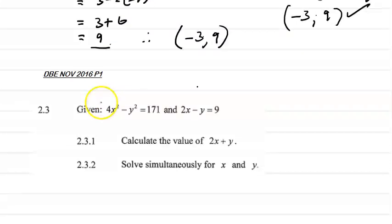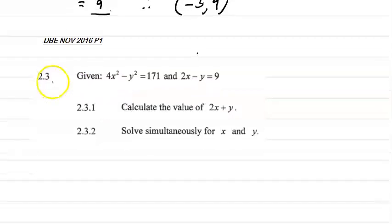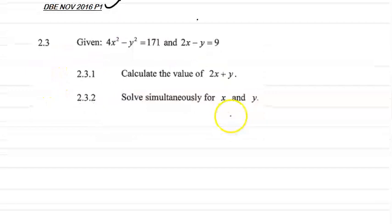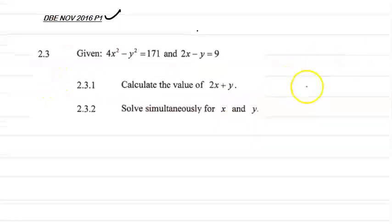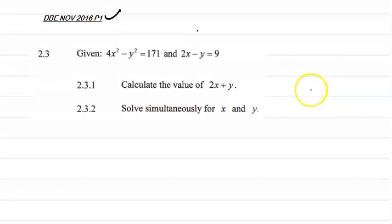So let's look at today's question. The first question that we're going to be looking at is from the DBE November 2016 paper 1. The reason that I chose this question is that it's a different type of question as opposed to the one that we did in the previous video. Let's read the question and then we can go through it. 4x² - y² = 171 and 2x - y = 9. The first question says calculate the value of 2x + y.